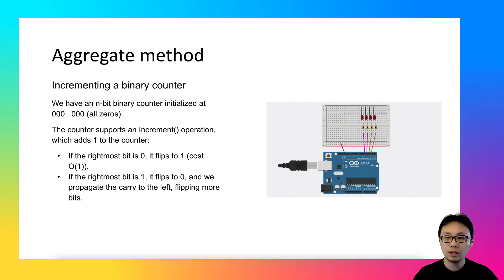If the rightmost bit is zero, it will be flipped to one. However, if the rightmost bit is one, then the increment operation will not only flip it to zero, but also propagate the carry to the left, which may flip more bits leftward.